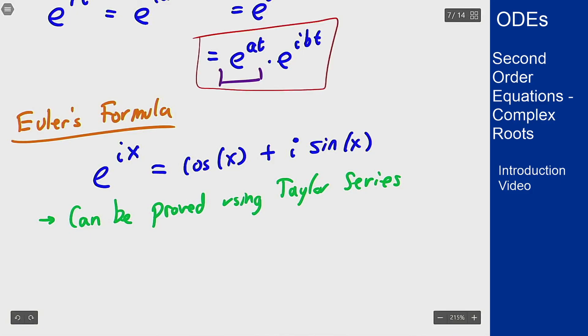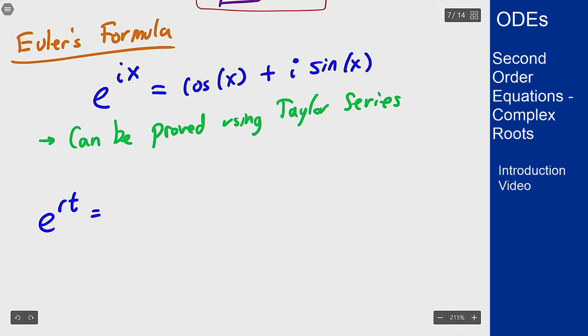So it tells us then that e^(rt) is going to be something like e^(at) times [cos(bt) + i·sin(bt)].